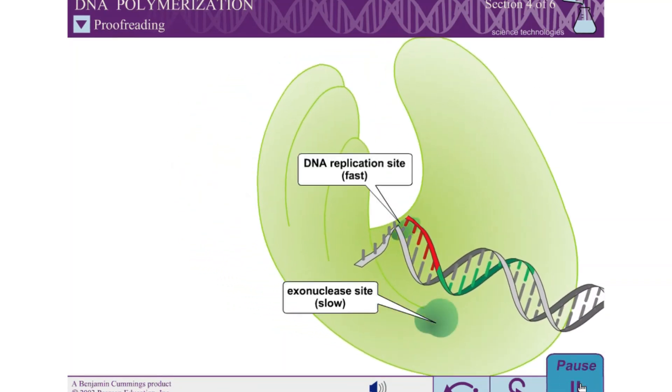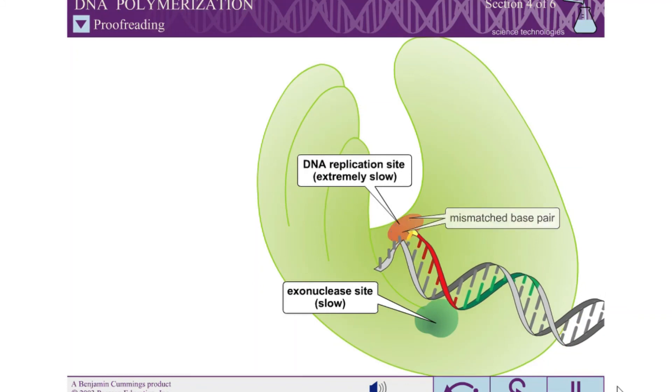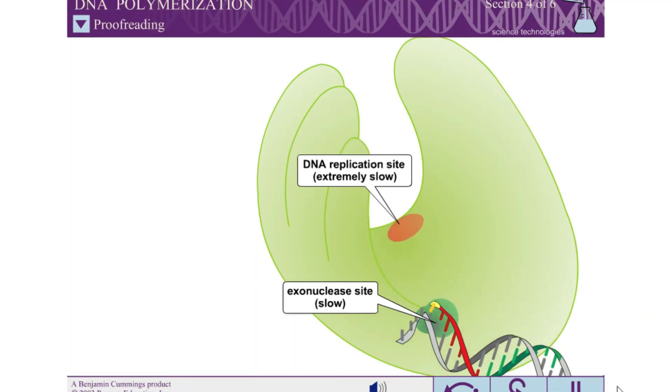In the rare event that a mismatched base pair is added, the distorted geometry of the substrate causes the replication rate to slow dramatically. The palm domain is now not able to make contacts with the minor groove, and consequently the primer template junction is free to move about and interact with the exonuclease site. The exonuclease site removes incorrectly base paired nucleotides starting from a 3 prime DNA end, and is therefore called a proofreading exonuclease.